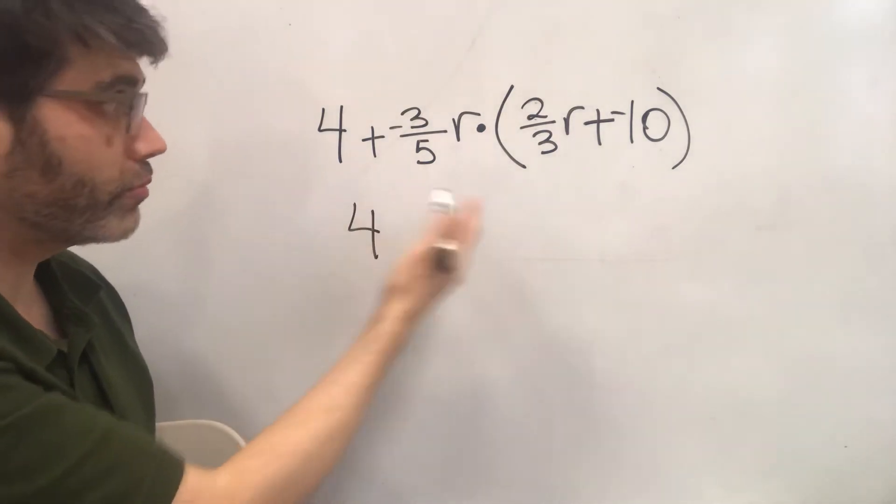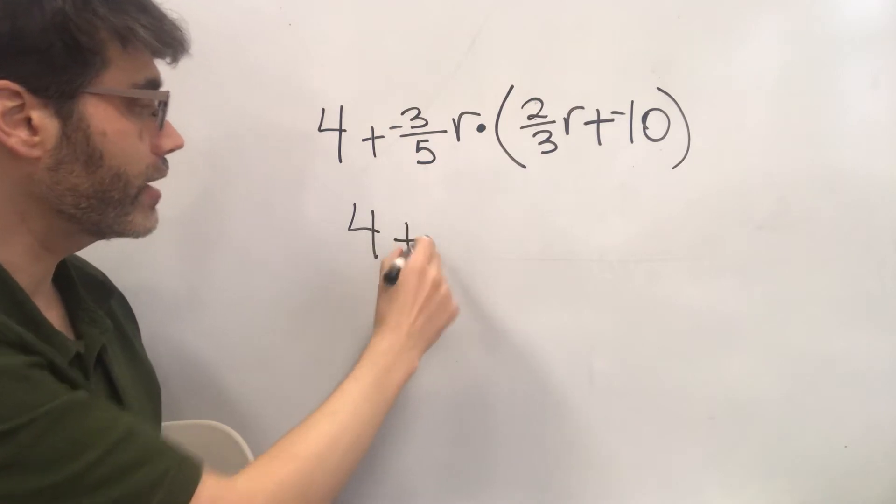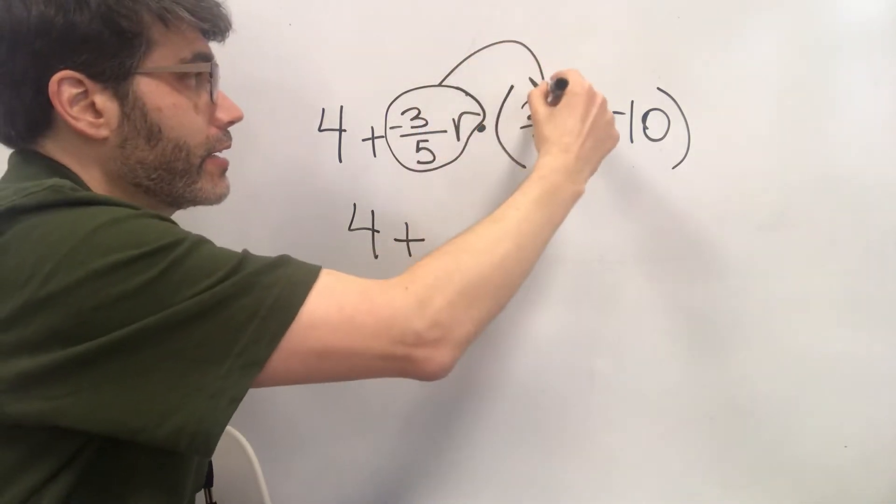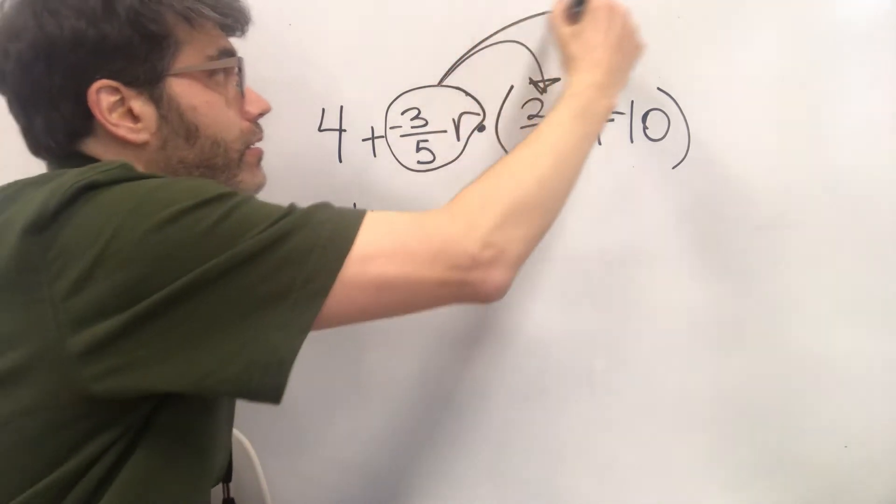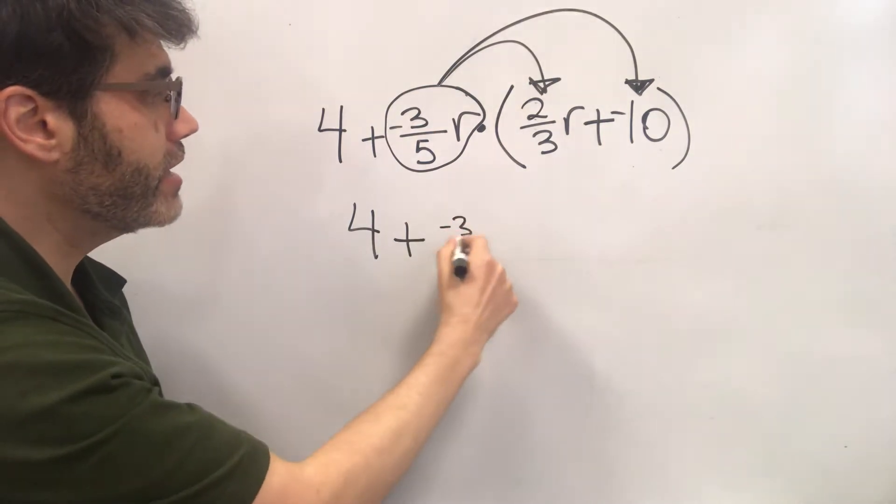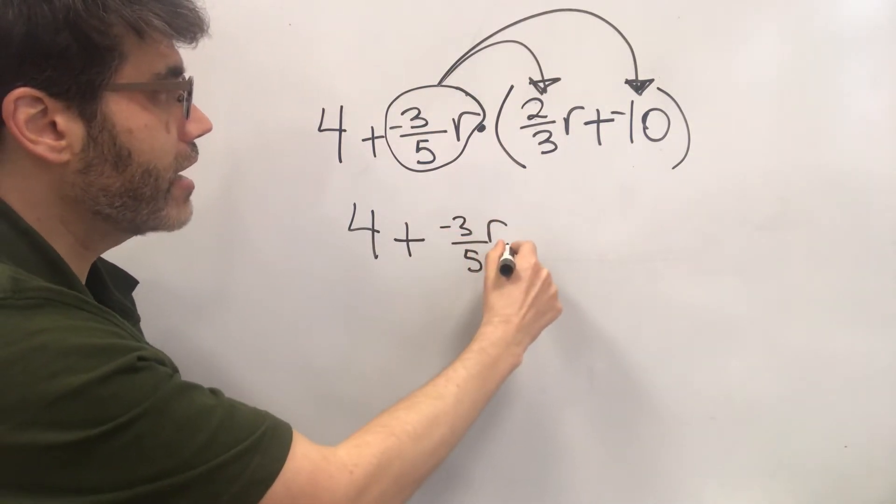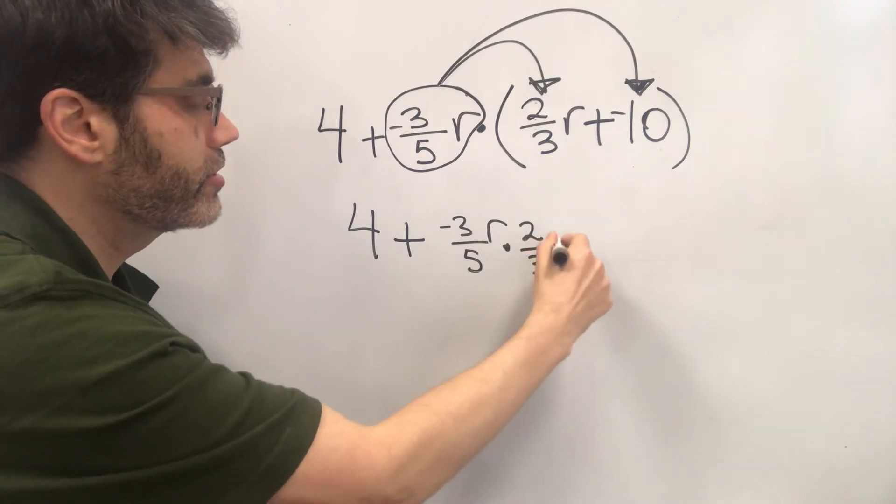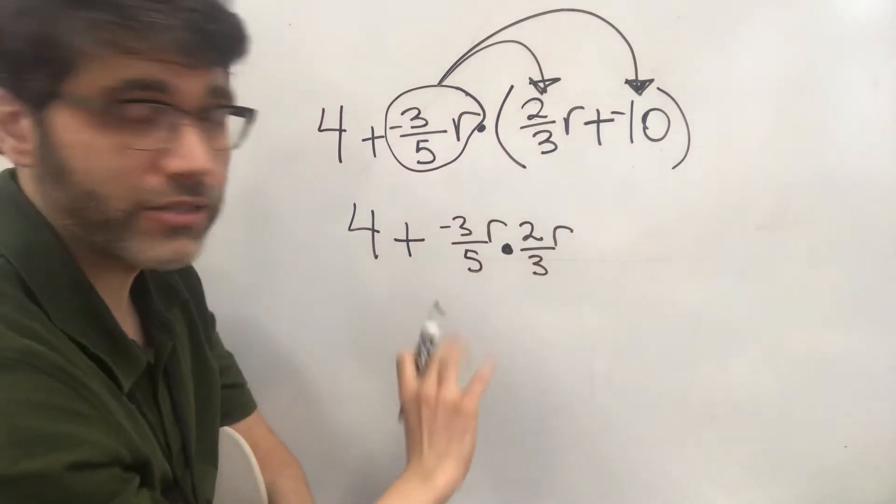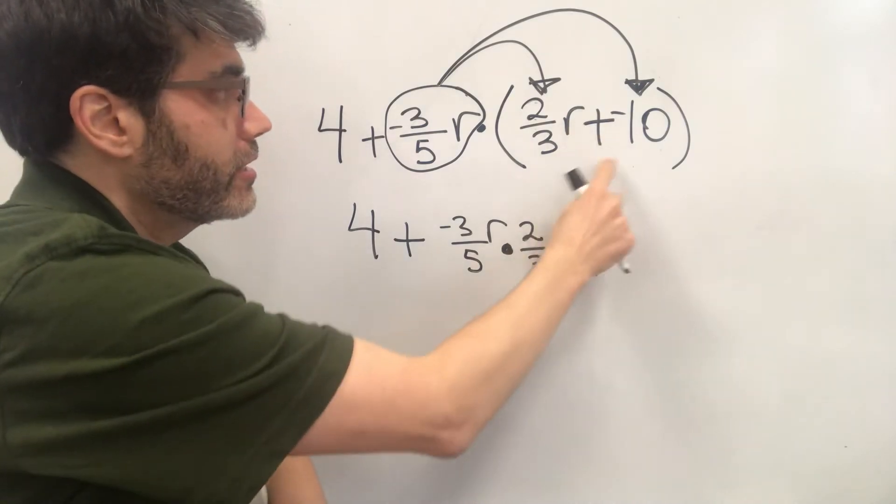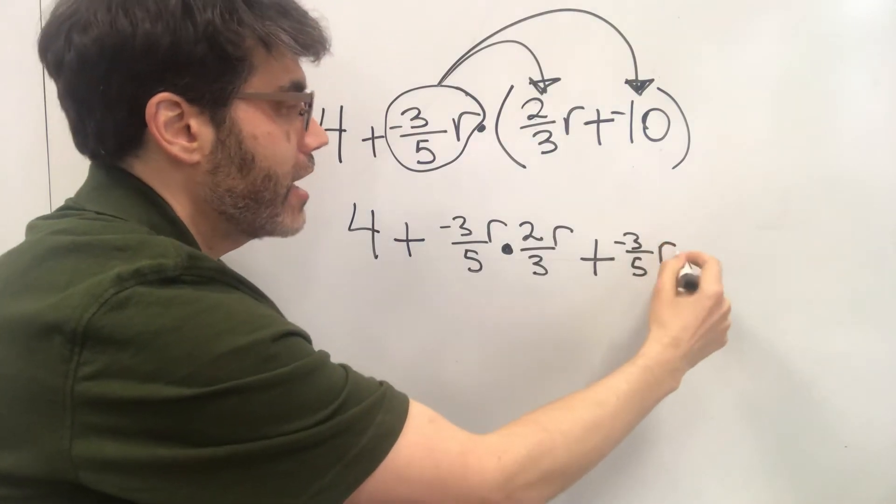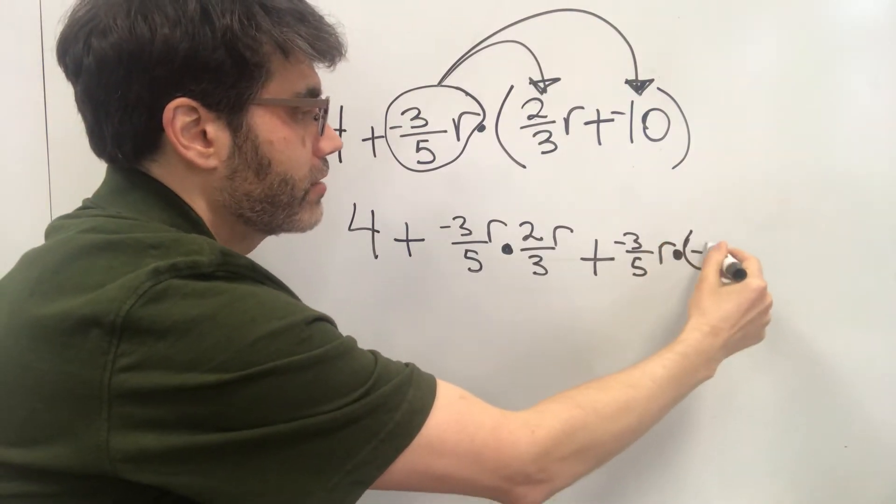So now we bring down the four because we can't do anything with four quite yet. And we're going to add, and we're going to take this term, negative three-fifths r, we're going to multiply it times this term. Then we're going to add it to the product with that term. So negative three-fifths r times two-thirds r. So we just multiply those two. We're not done yet, but that's a good start. Plus, we have to honor this addition sign, plus negative three-fifths r times negative ten.